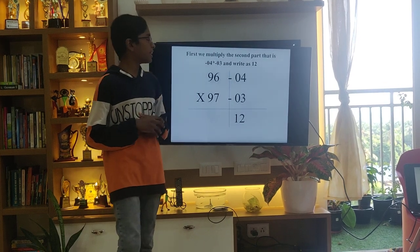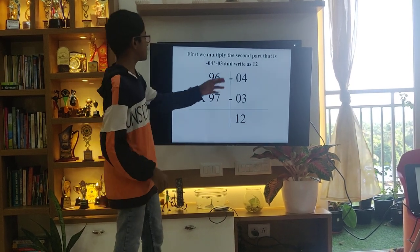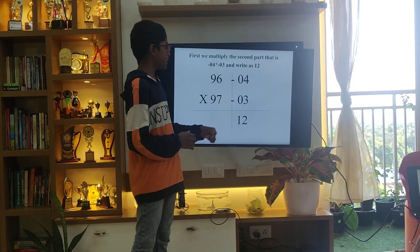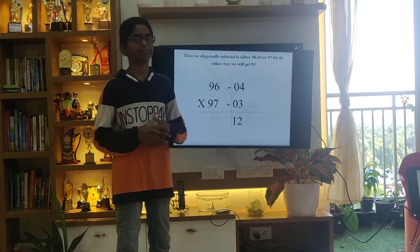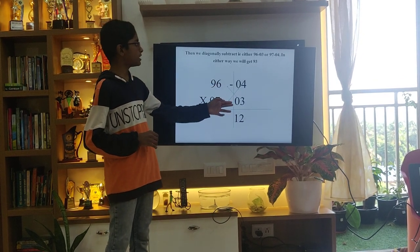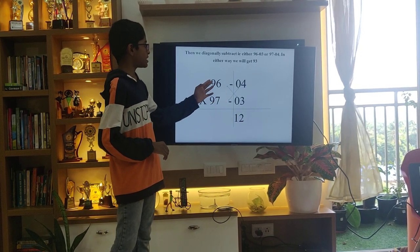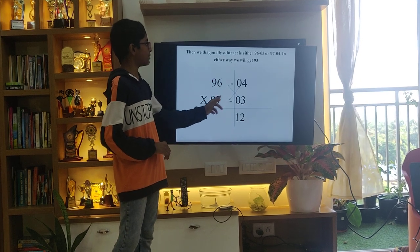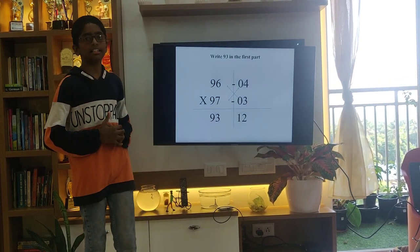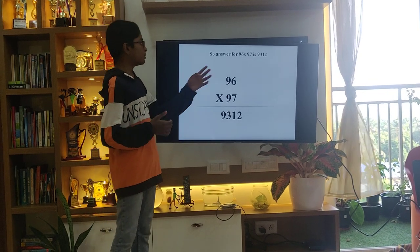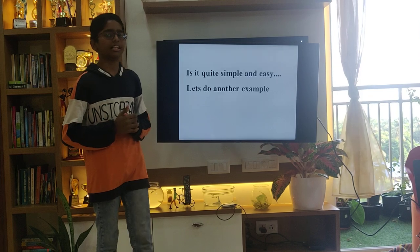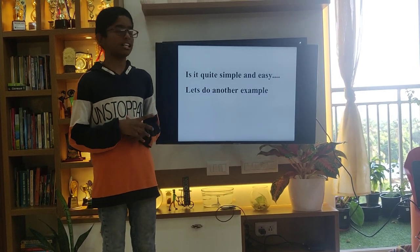Then, we will multiply the second part — that is, minus 04 into minus 03 — and we will get a product of 12. Then, we will diagonally subtract either 96 minus 03 or 97 minus 04. So, 96 times 97 is equal to 9312. Isn't it so simple and easy?